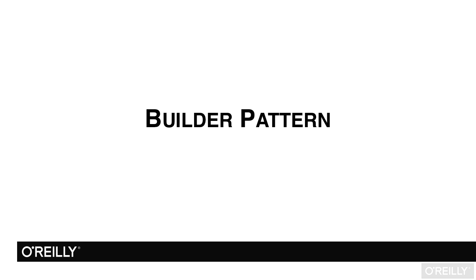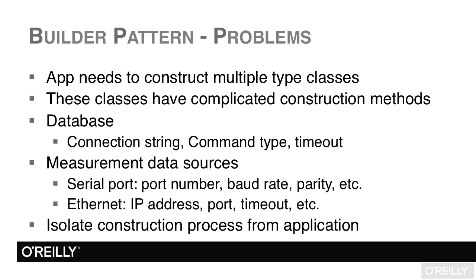Sometimes we have to create objects that have a lot of properties or settings, and perhaps they also have sub-objects that we have to deal with. So the process of creating these objects can be really long. The builder pattern is a pattern we can use to help with that problem. We need to construct complex classes that have complicated construction methods — they may set a lot of properties, have sub-objects, or have arrays requiring multiple instances to be initialized.